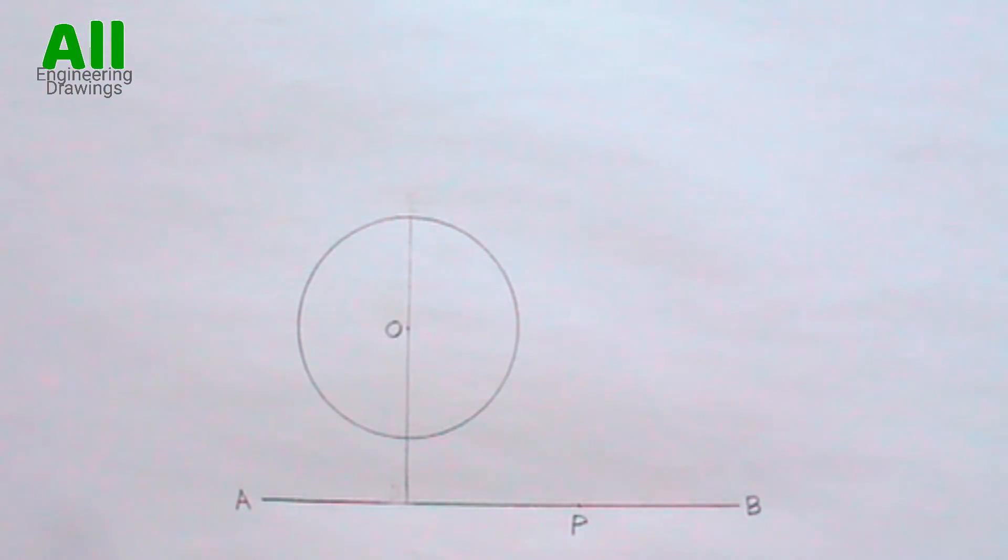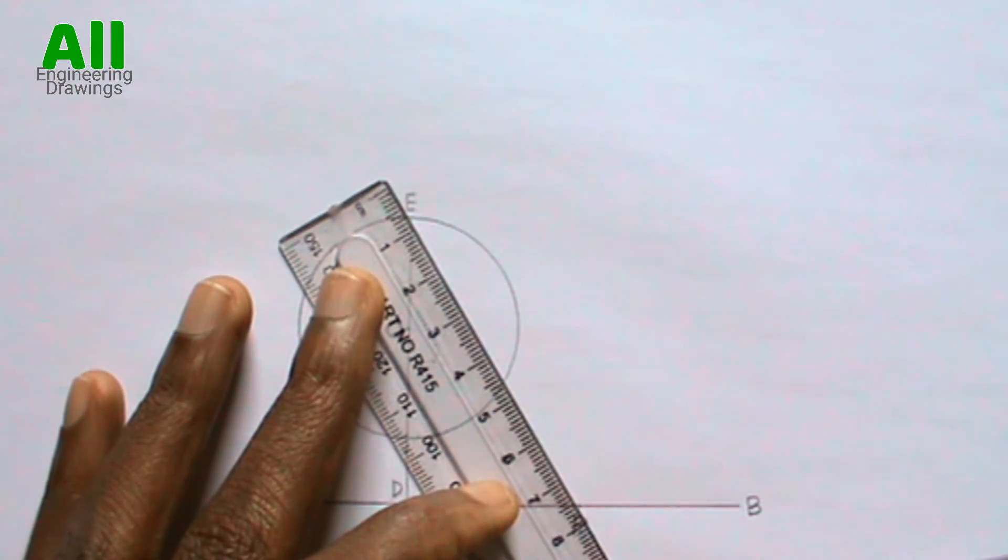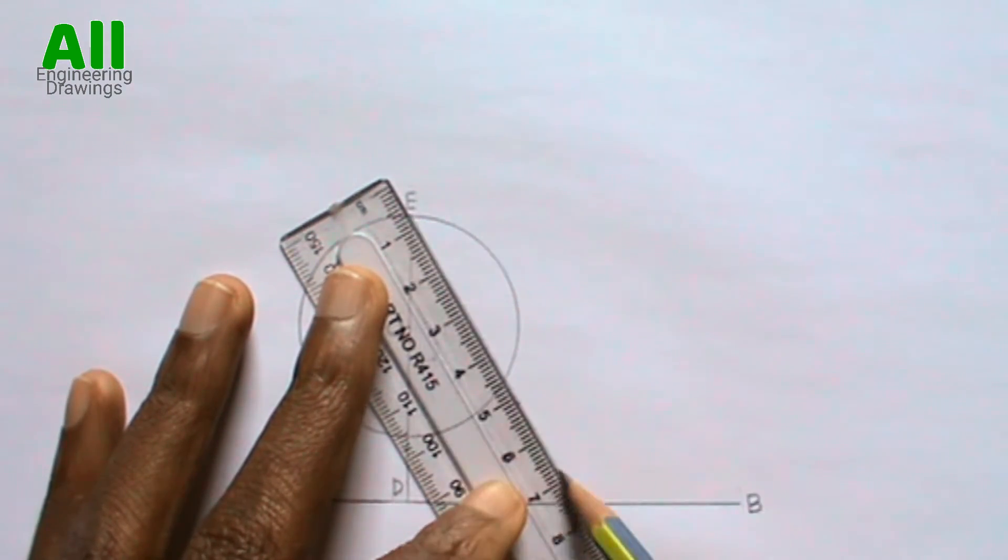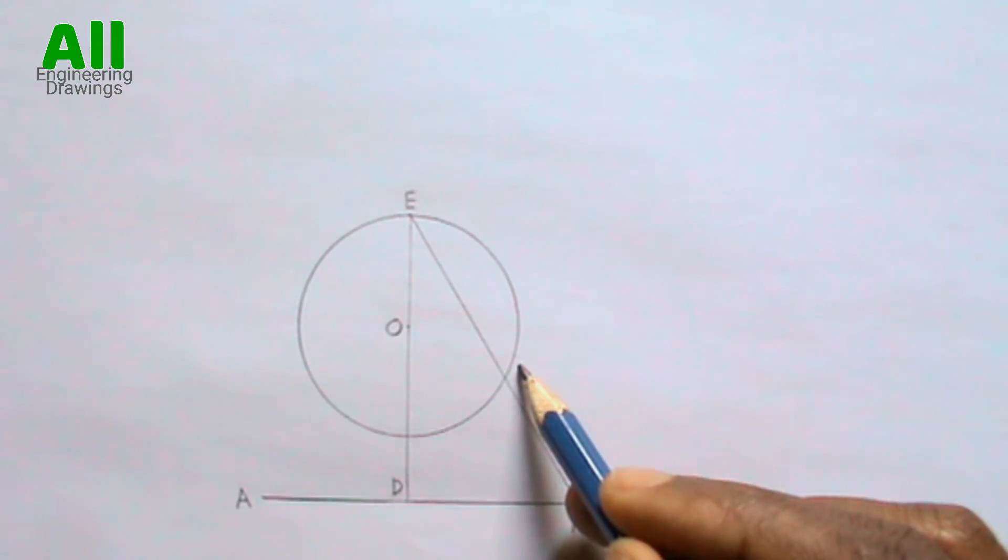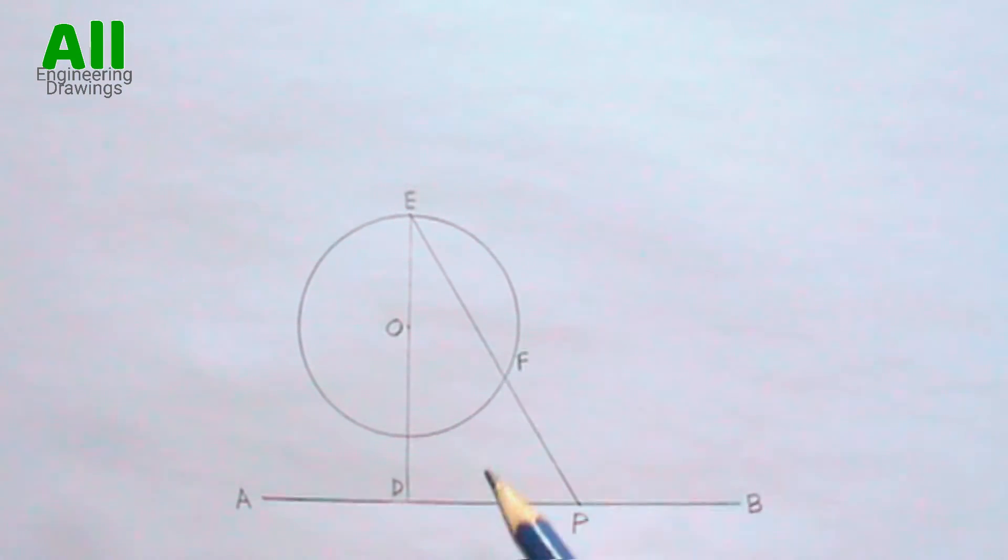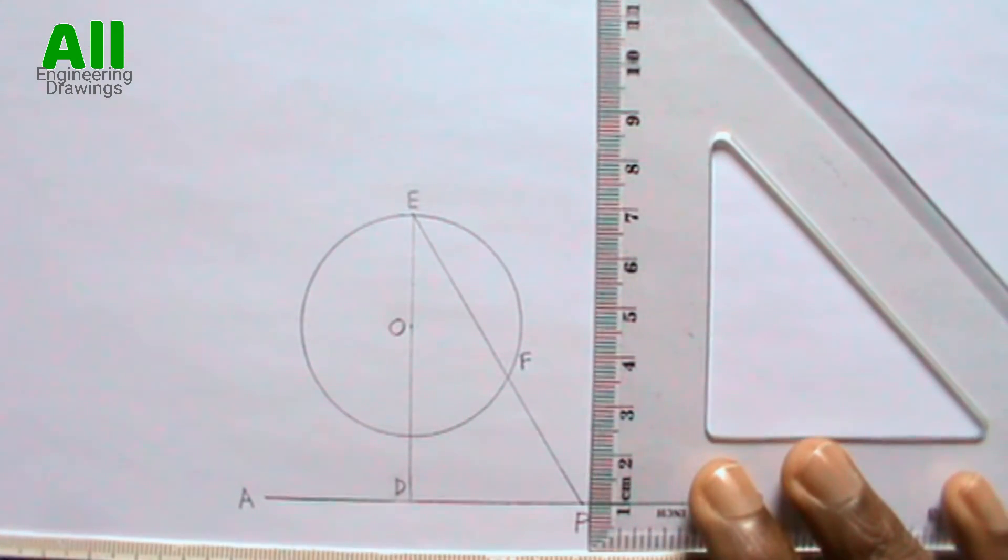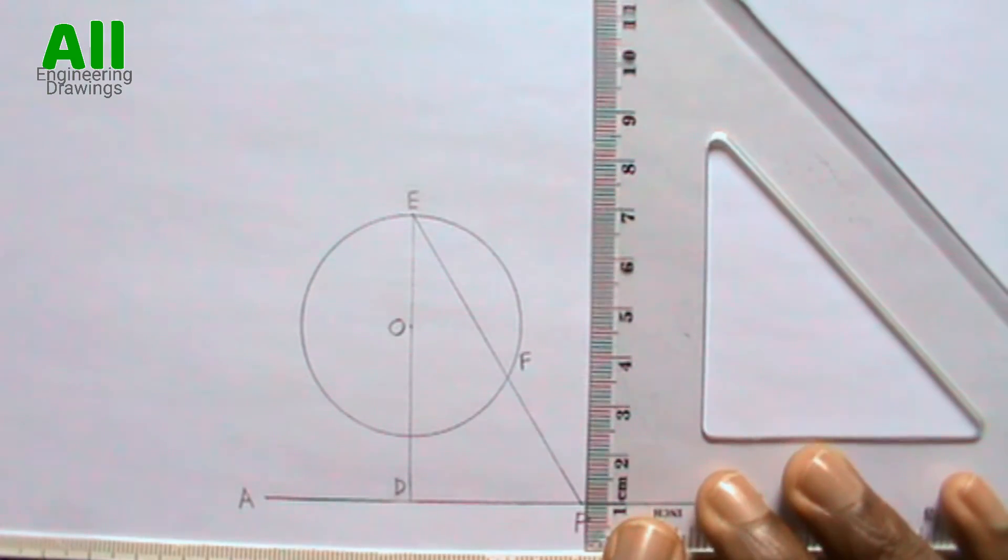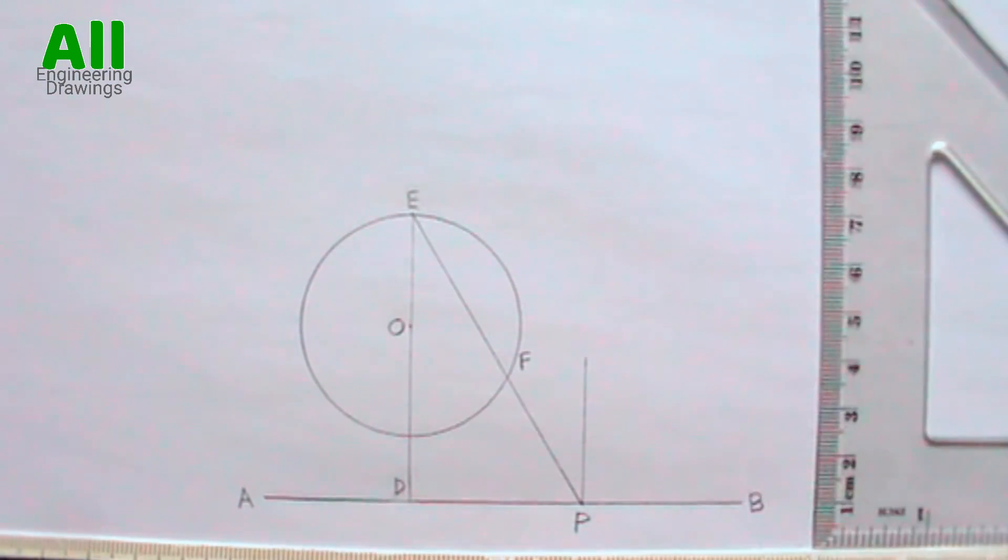Label the center of your cycle. Label the point where the line intersects line AB and the point where the line intersects the circumference of the cycle from point P.